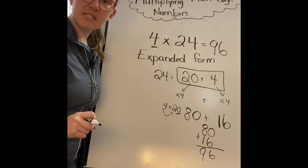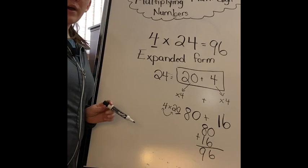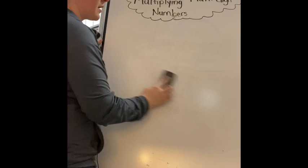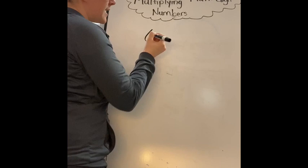That's how we can multiply bigger multi-digit numbers, break it up using expanded form. We're going to do another one so we can practice it. If you have a piece of paper I'd like you to try this along with me. Let's erase this one, let's go a little bit higher, let's do 6 times 32 equals.